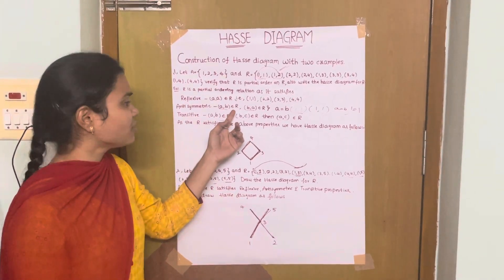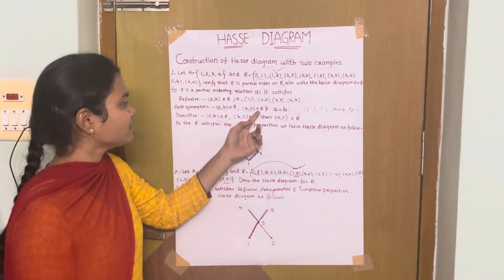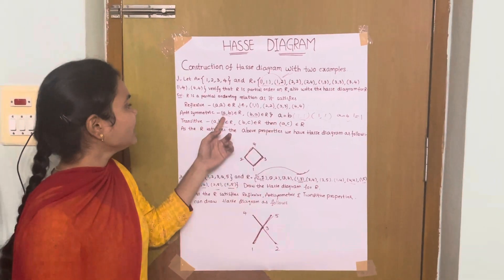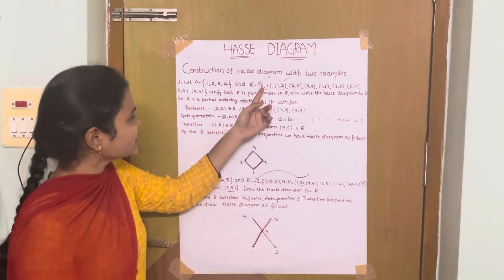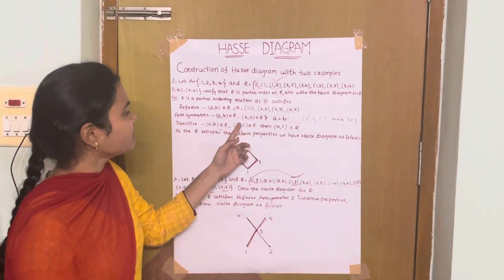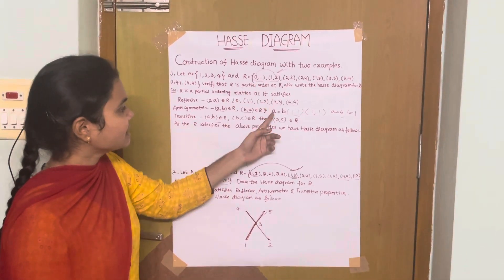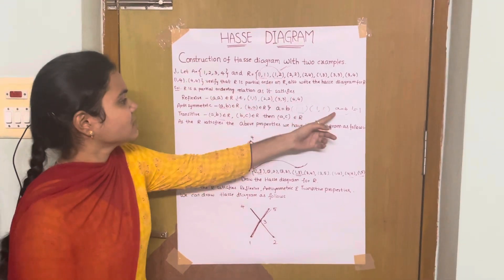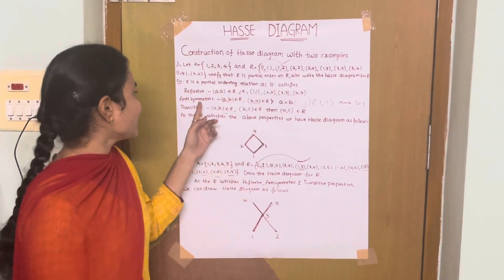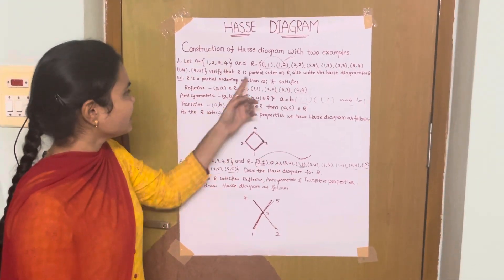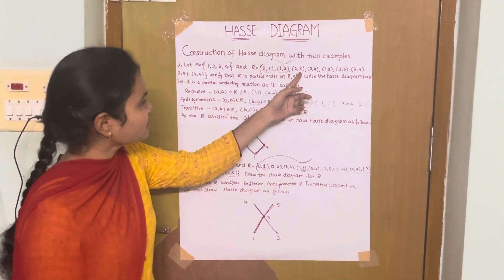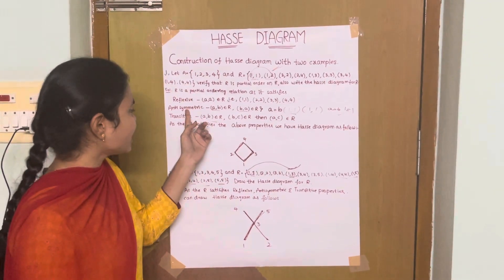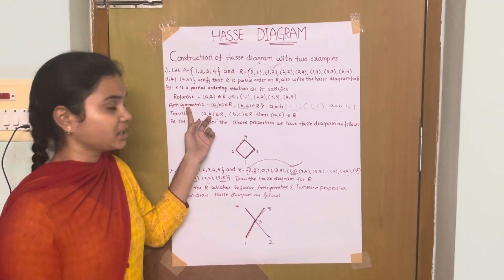Antisymmetric means if (A, B) belongs to R and (B, A) belongs to R, then A equals B. Here, consider (A, B) as (1,1) and (B, A) as (1,1). Since A equals B, that is 1 equals 1, it satisfies antisymmetric. Similarly, (2,2), (3,3), and (4,4) also satisfy the antisymmetric property.